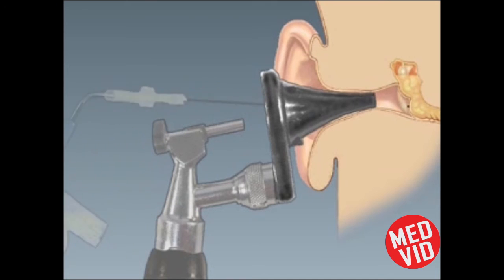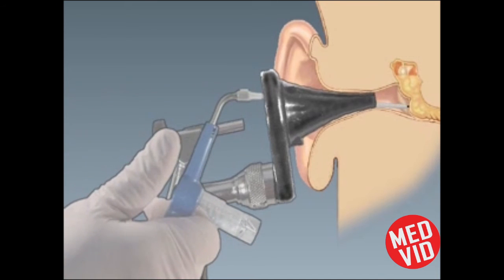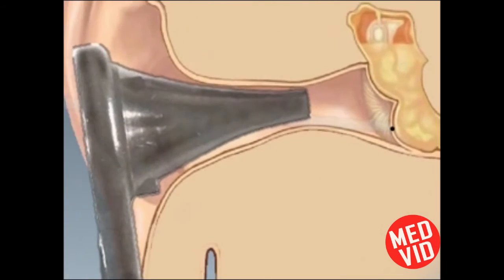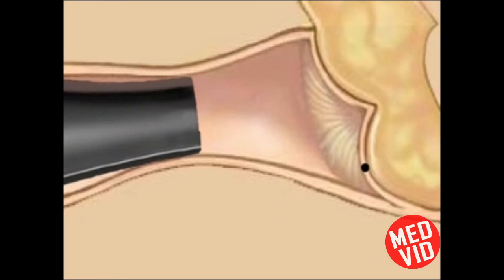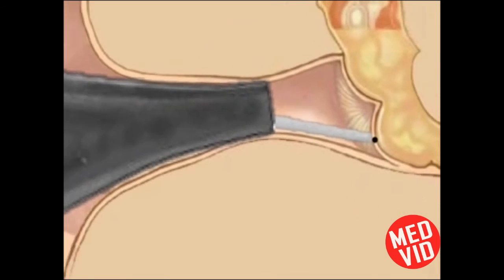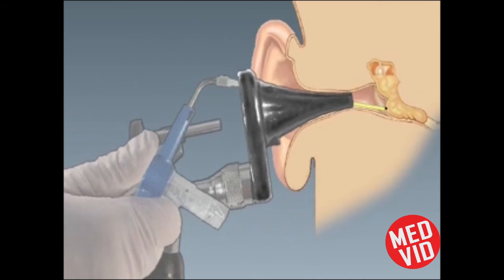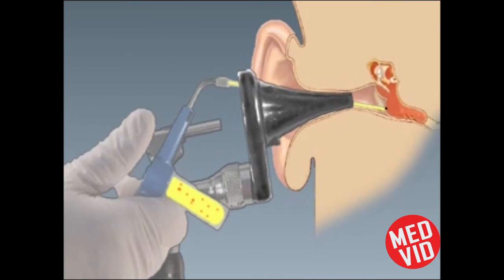Use a second tympanocentesis aspirator with a flexible catheter to suction any remaining pus from the middle ear. Insert the catheter through the speculum and place it over the opening in the tympanic membrane made by the needle. The catheter should not go through the tympanic membrane. This step also clears the debris in the external auditory canal and may enhance visualization of the tympanic membrane at future visits.